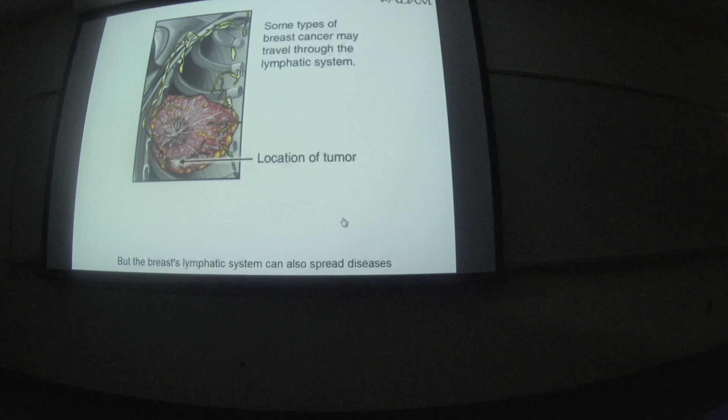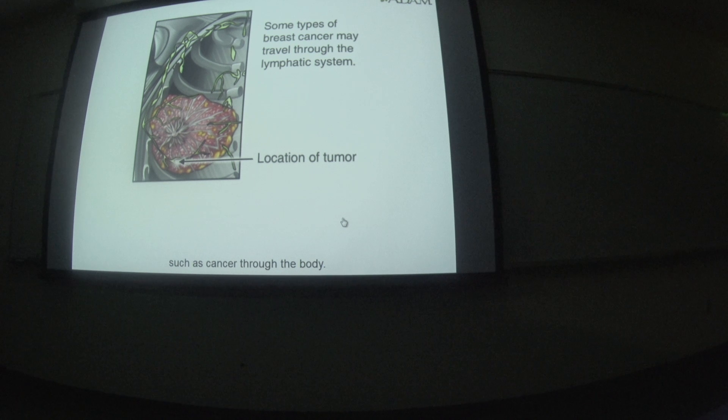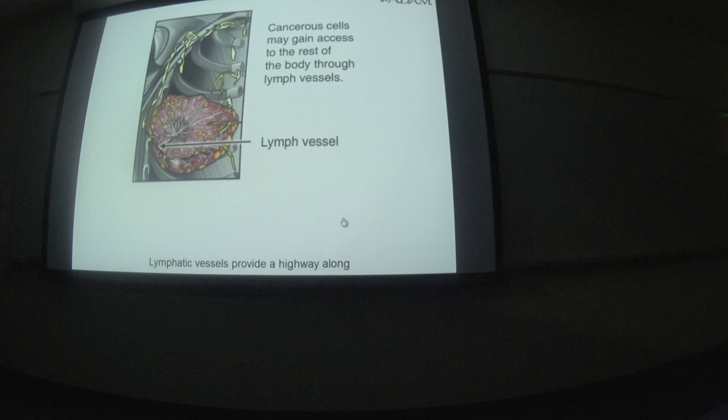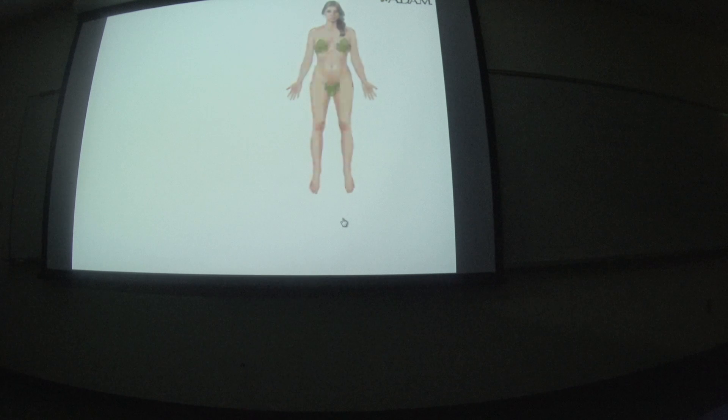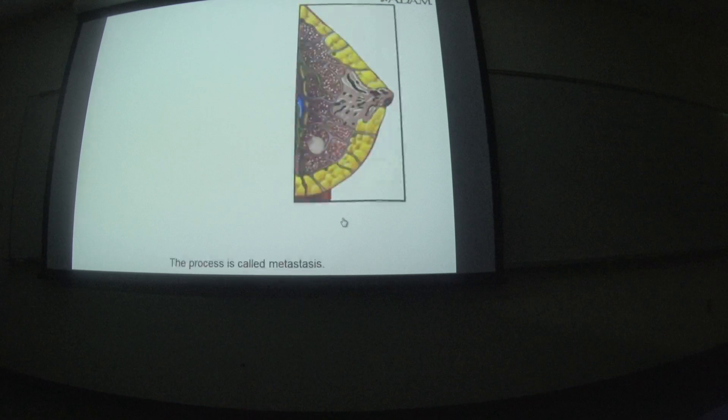But the breast's lymphatic system can also spread diseases such as cancer through the body. Lymphatic vessels provide a highway along which invasive cancerous cells move to other parts of the body. The process is called metastasis.